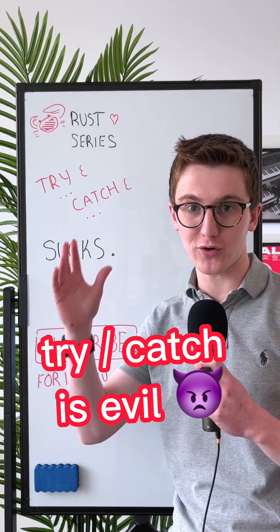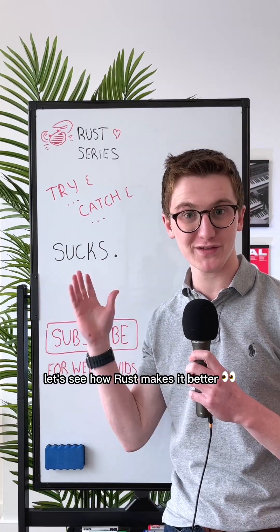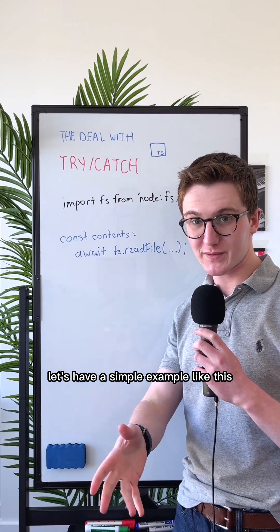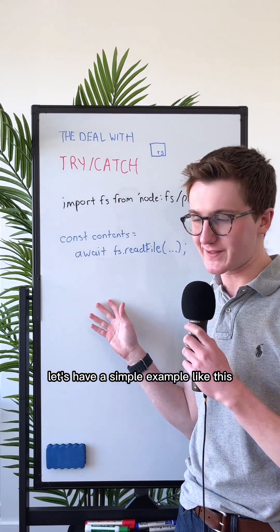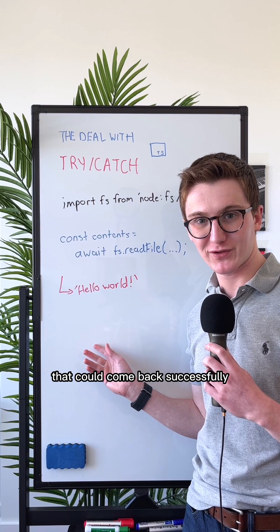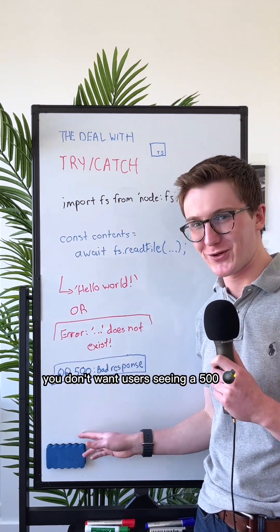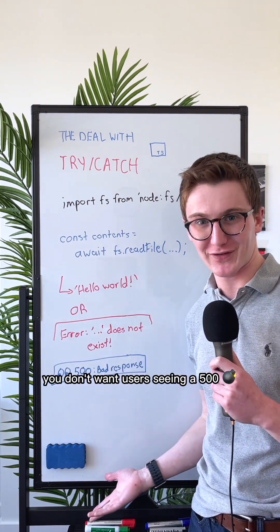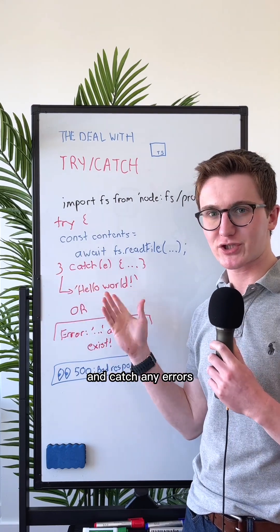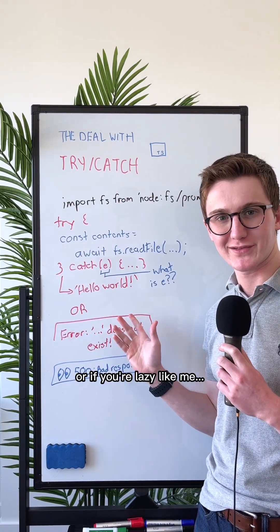Try/catch is the root of all evil in JavaScript. Let's see how Rust makes it better. With a simple example using Node to read a file, the call could come back successfully or throw an error — and that's probably unexpected. You don't want users seeing a 500 error, so you wrap it with a try and catch any errors.